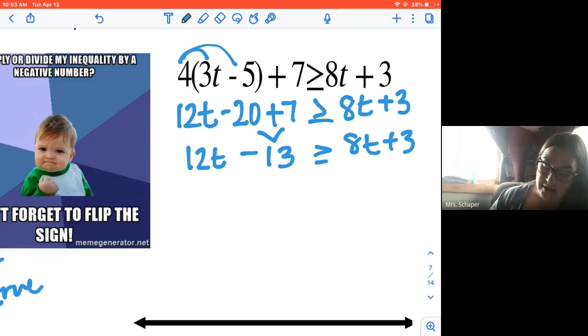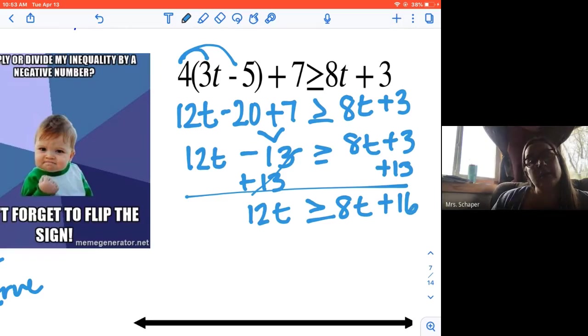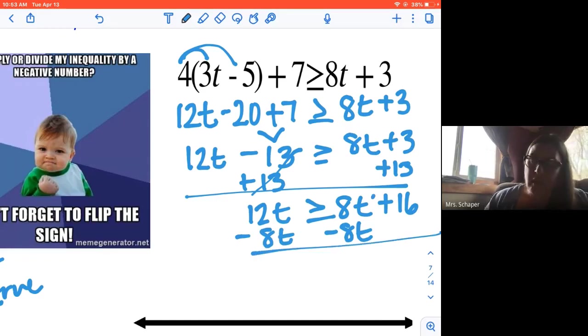Now I'm going to get variables. I'm going to work on that isolation piece. So I'm going to add 13 to both sides. So 12t is more than or equal to 8t plus 16. And now I want to get the t's on one side. Now here's the thing, kiddos.